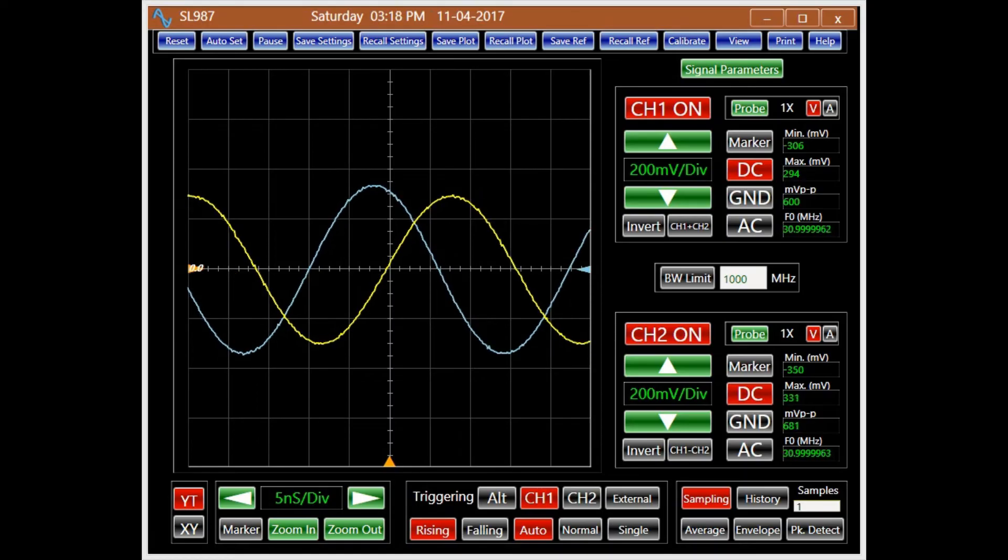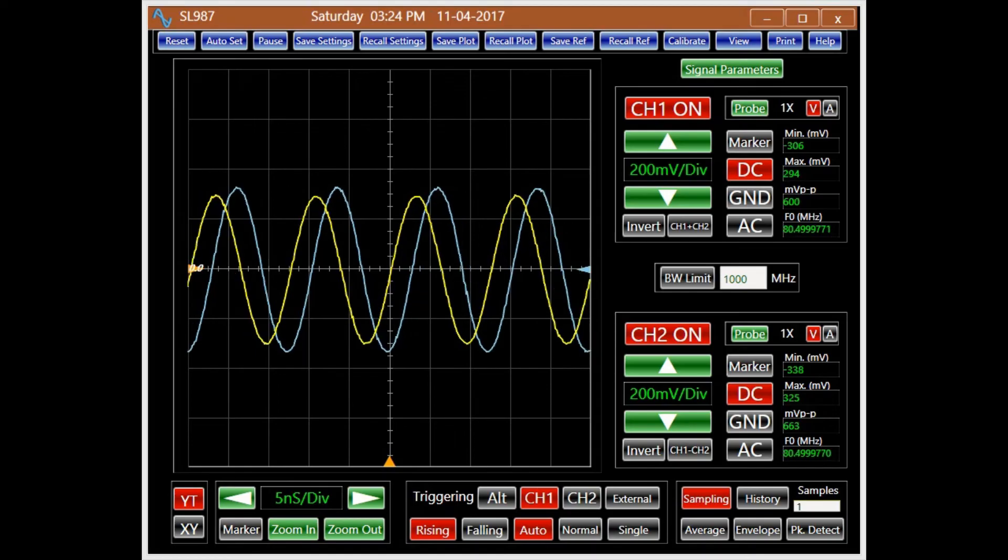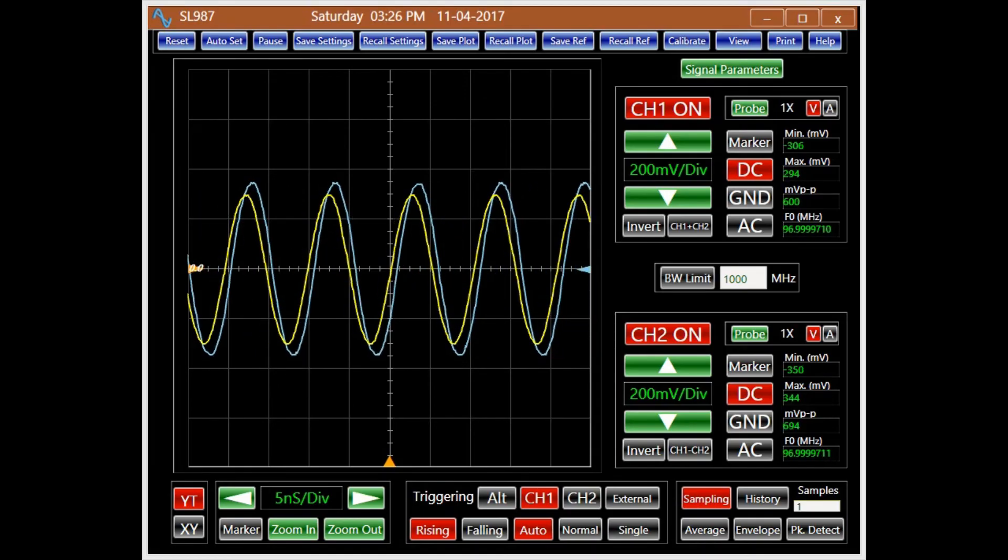The small variation of the signal at the connector is due to the slight impedance mismatch between the cables, source, load, and BNC connectors.